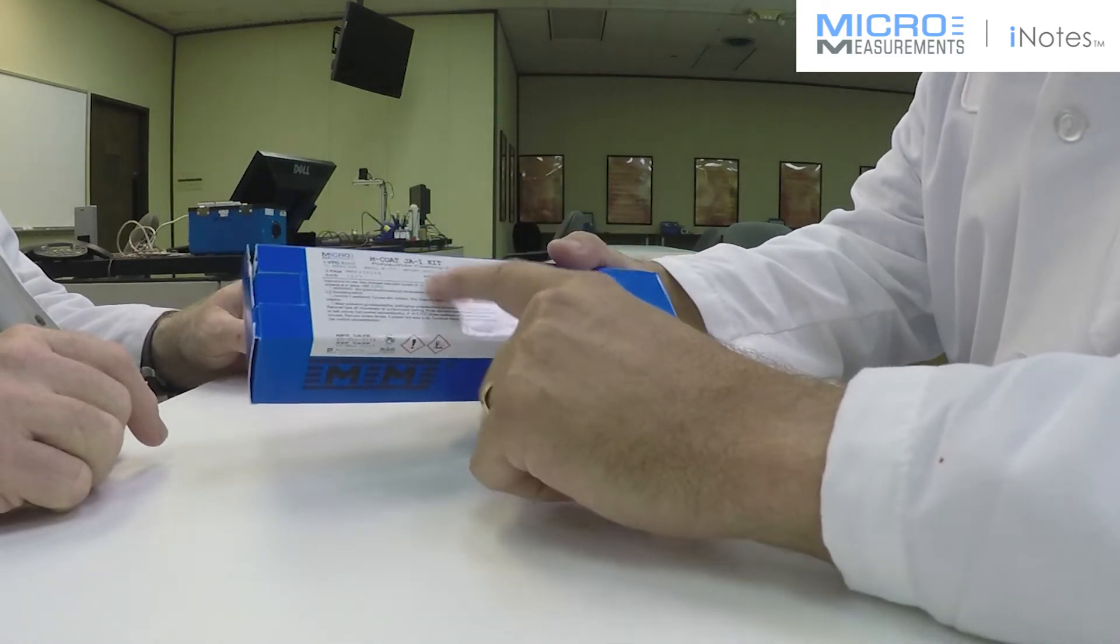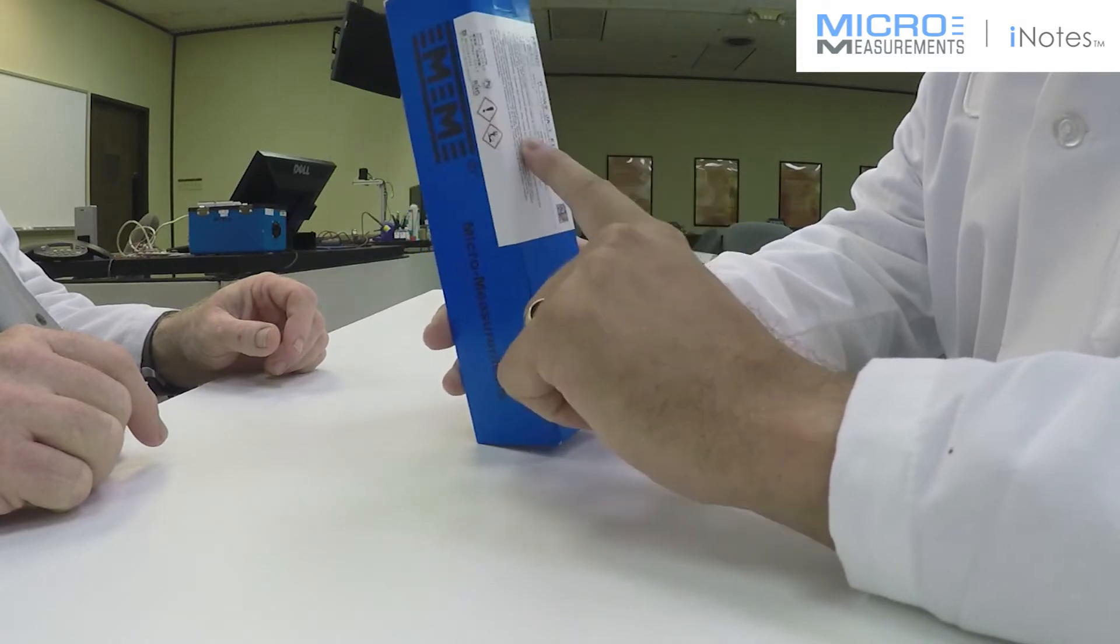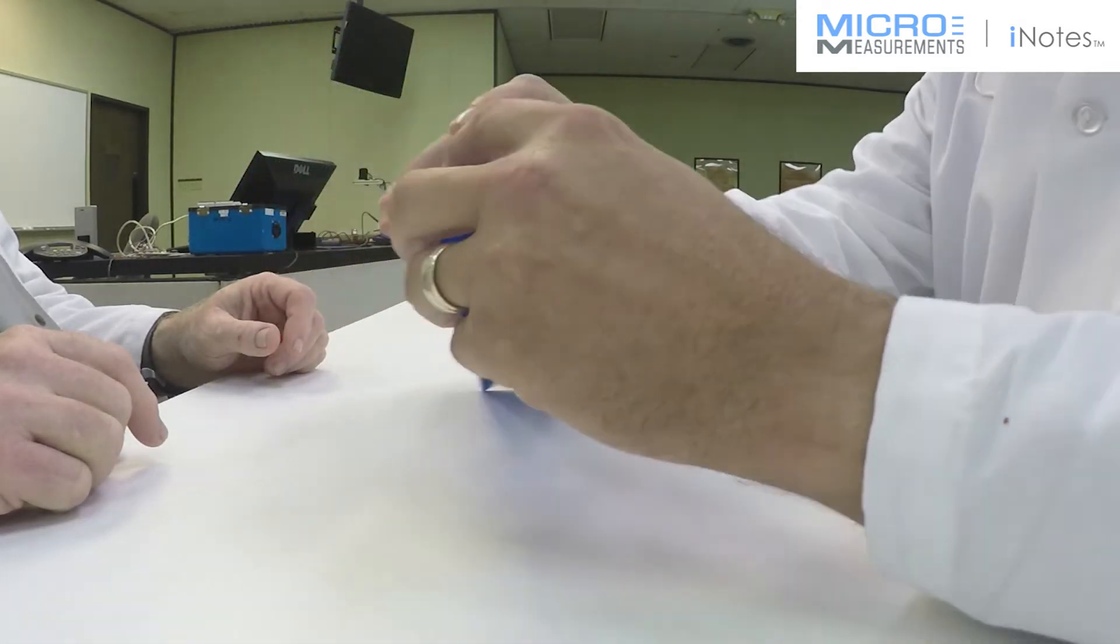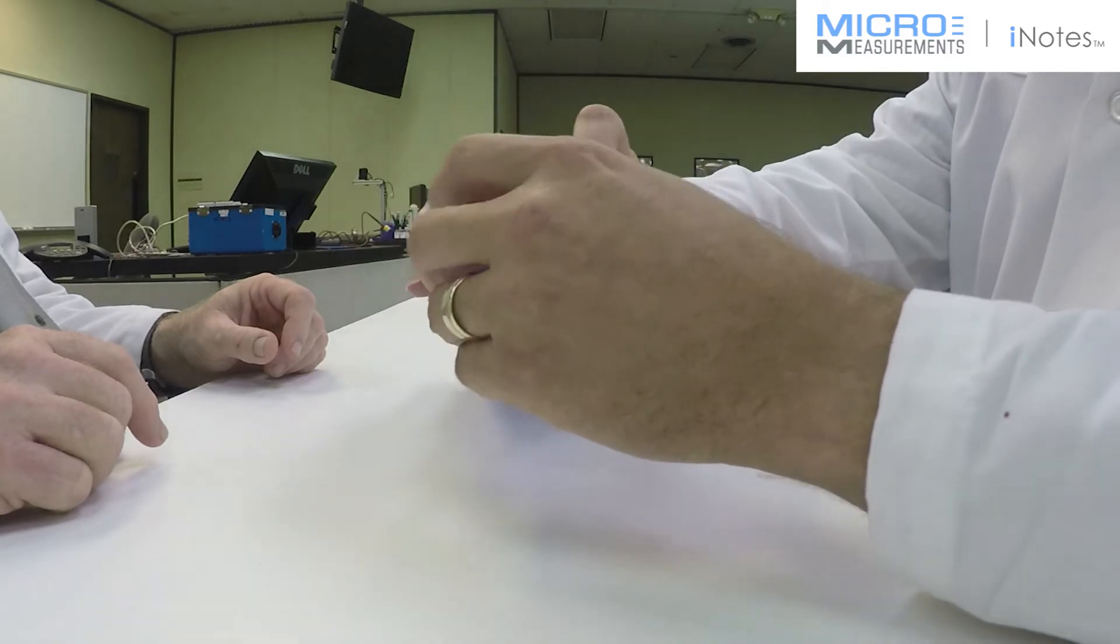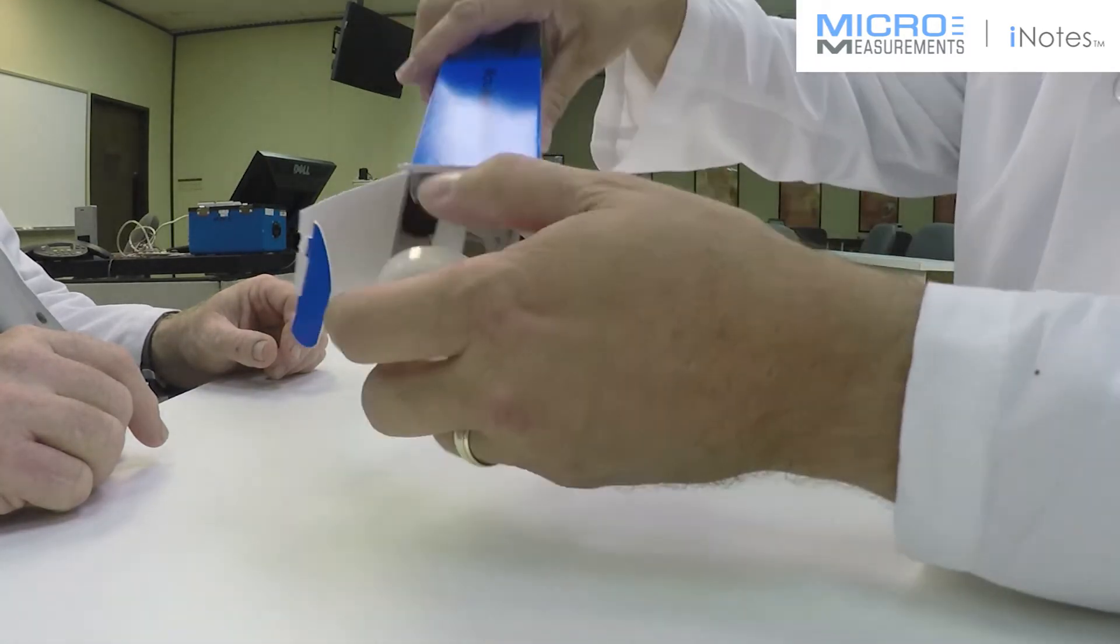Excellent. And when you look at this kit, it's called the MCOTE JA-1. The dash one means that you've got a single mix of polysulfide inside of the box. So what I'm going to do is open it up, reach inside and show you what's in the box.